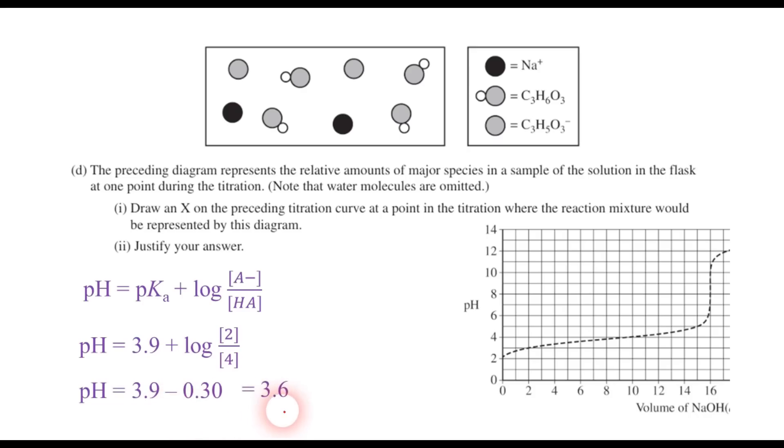So when I key this into my calculator, I find that the pH is about 3.6. So I need to place an X on the graph right around pH 3.6. So that's right around here. So that is where you should have put the X.